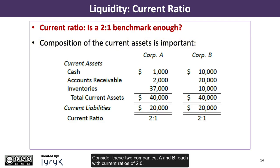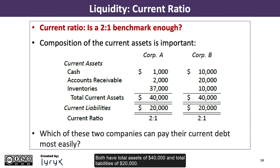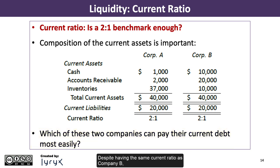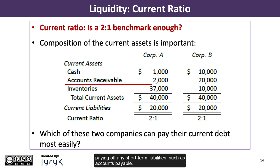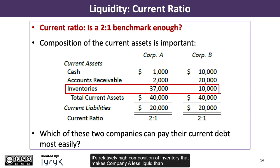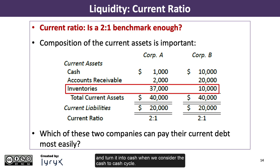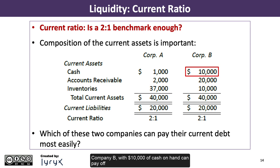Consider these two companies, A and B, each with current ratios of 2.0. Both have total assets of $40,000 and total liabilities of $20,000. Despite having the same current ratio as company B, company A — with only $1,000 in cash and $2,000 in accounts receivable — is likely to have a tough time quickly paying off short-term liabilities such as accounts payable. Its relatively high composition of inventory makes company A less liquid than company B, because it takes time to sell inventory and turn it into cash. Company B, with $10,000 of cash on hand, can pay off accounts payable coming due more easily.